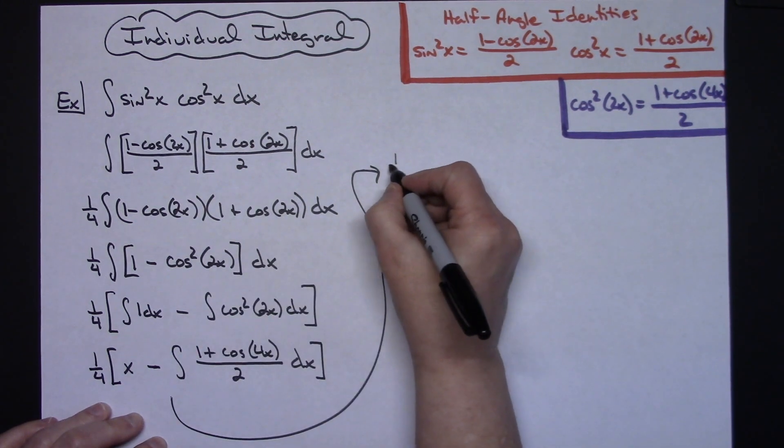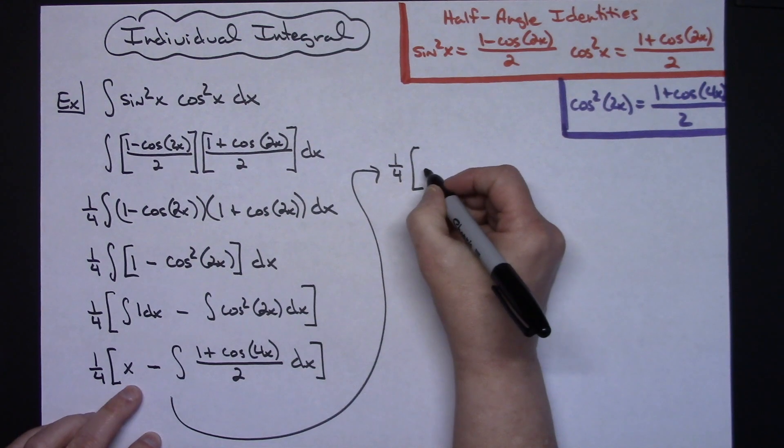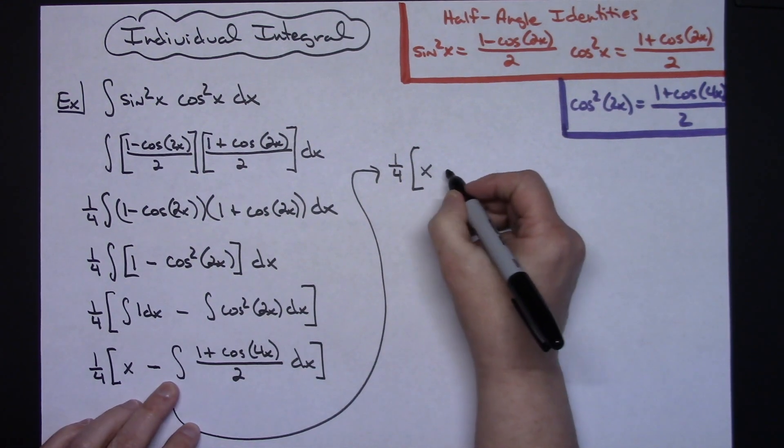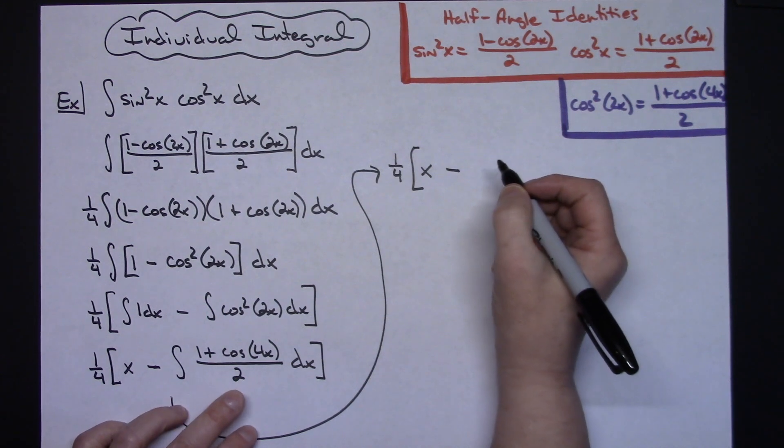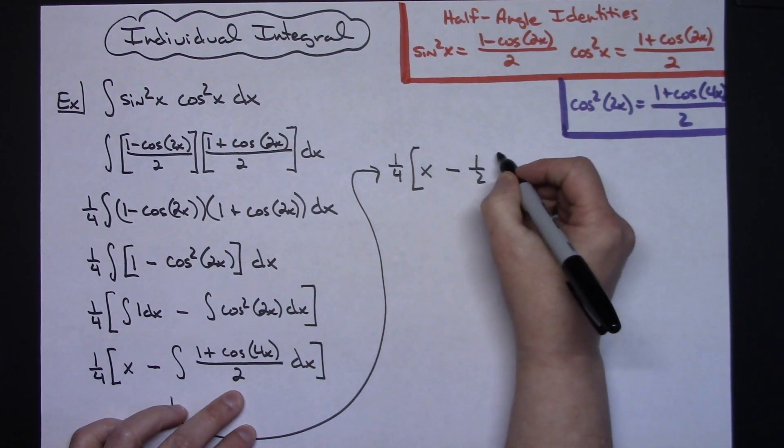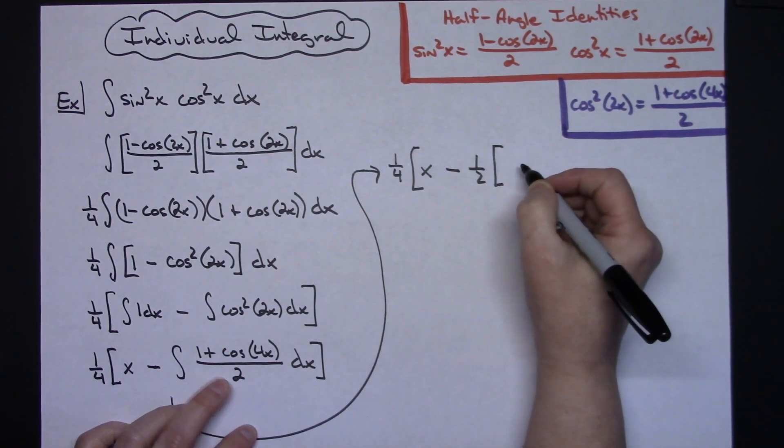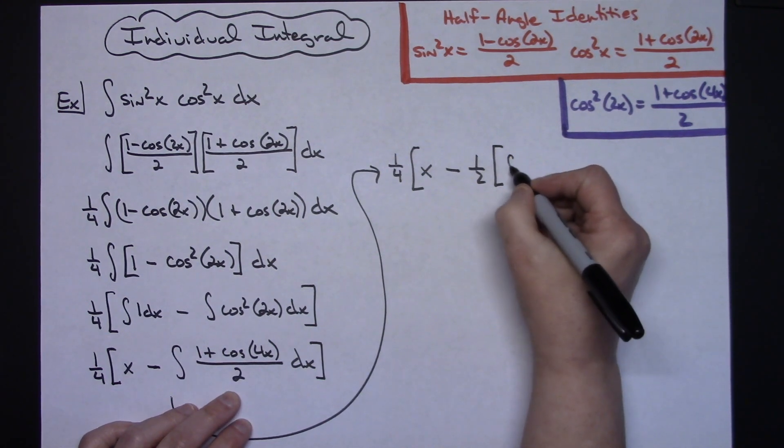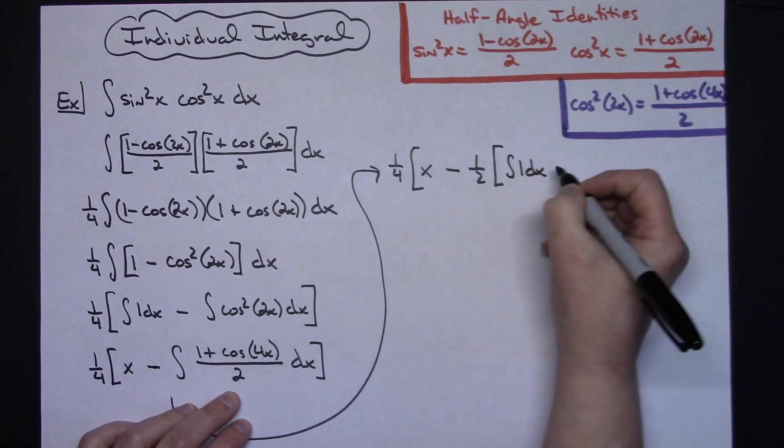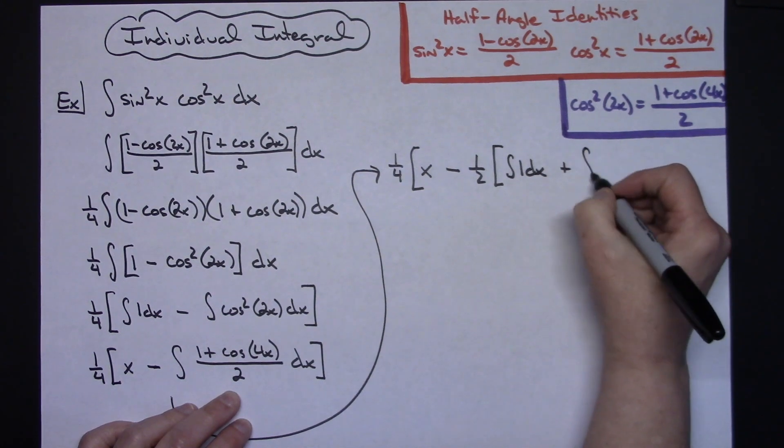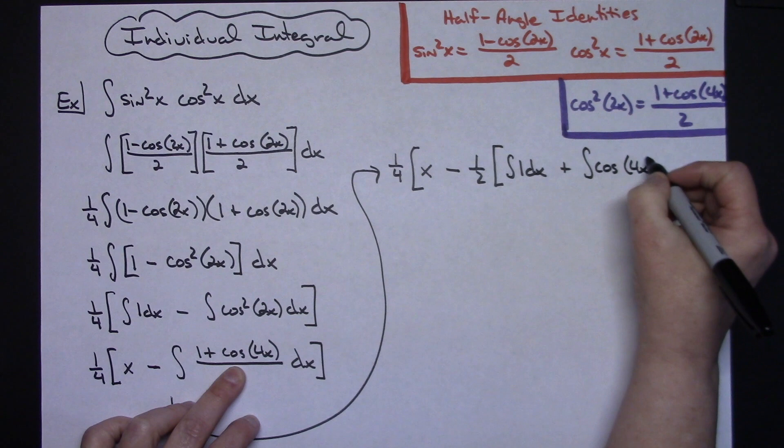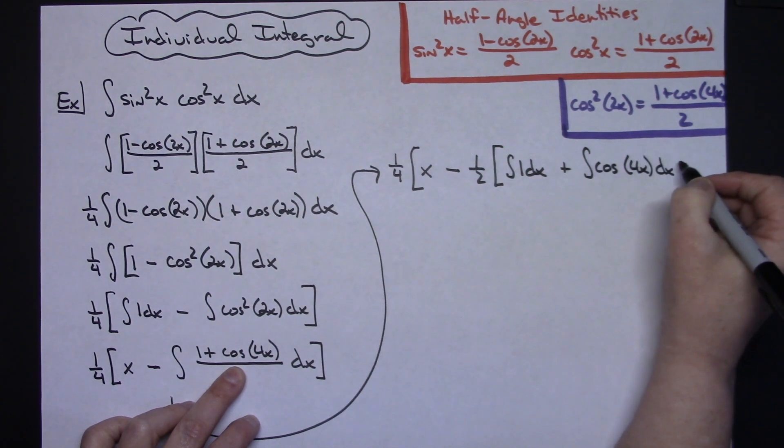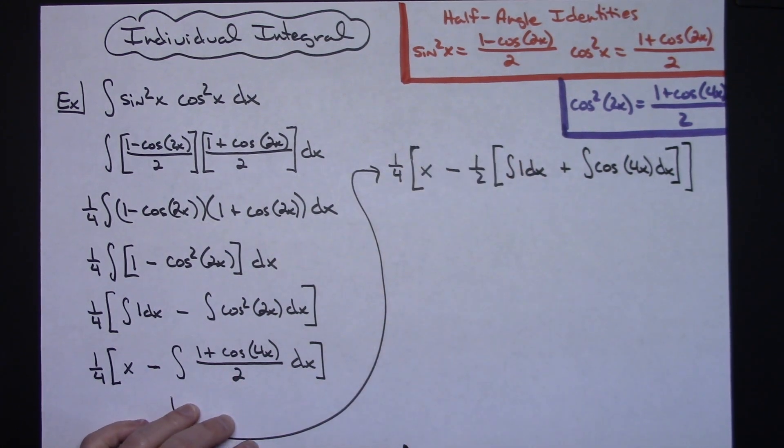So I will have a 1 fourth times the quantity of x and then minus. We're going to pull out the 1 half, so I'm going to have a 1 half times the quantity. Now I'm going to break up that numerator into two individual integrals. So the integral of 1 dx plus the integral of cosine of 4x dx. Closing the first set, closing the second set of brackets.